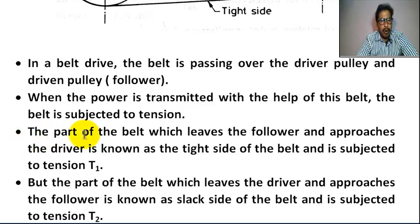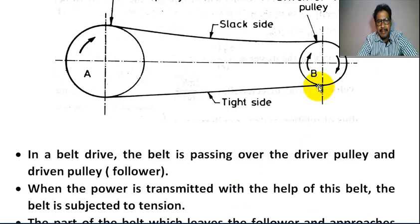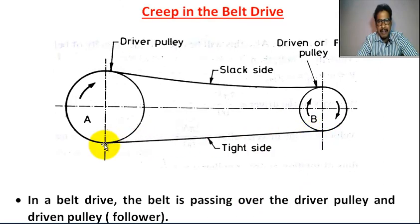The part of the belt which leaves the follower and approaches the driver is known as the tight side of the belt and is subjected to tension T1.